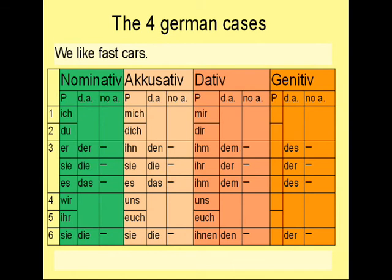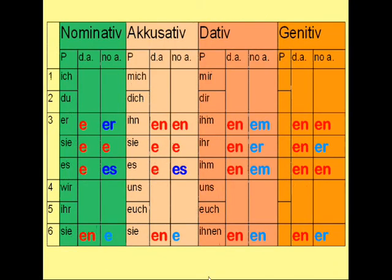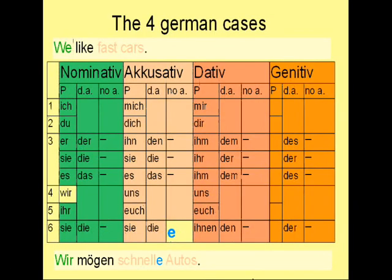How about: 'We like fast cars.' We is the subject in the nominative case. Fast cars is in the accusative case. Fast means schnell in German, and cars — Autos — is in the plural. The sentence starts: Wir mögen schnell Autos. Looking at the table for plural accusative with no article, the ending is E. The complete sentence reads: Wir mögen schnelle Autos.